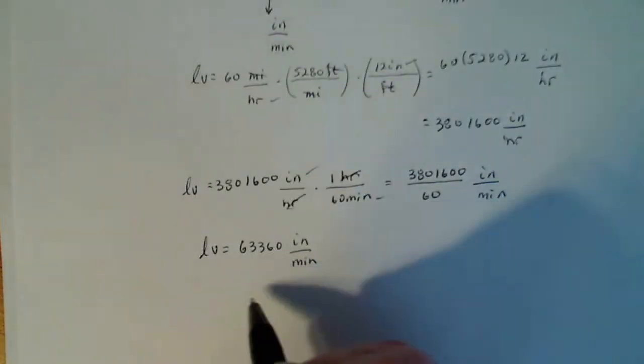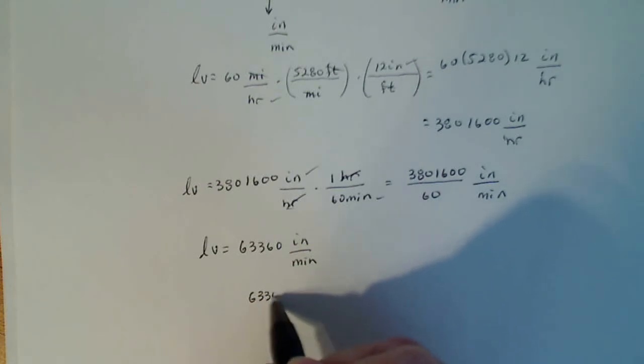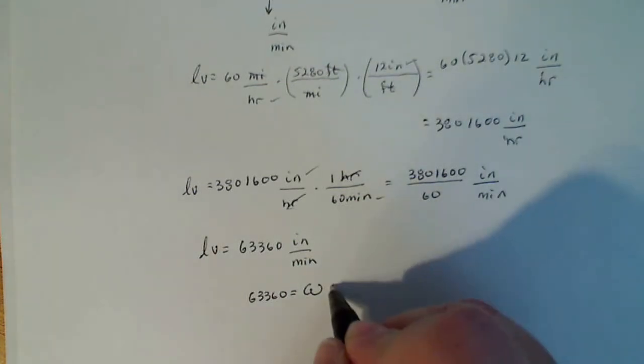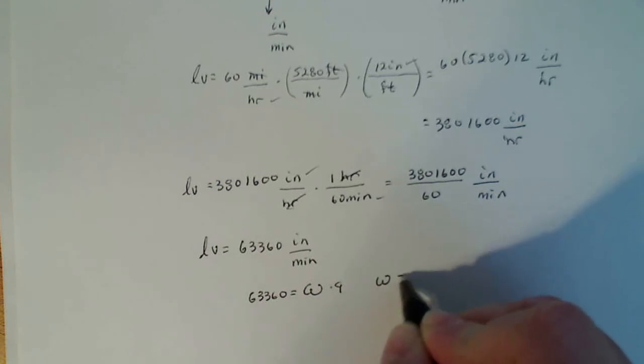So my current linear velocity is equal to my unknown, which is my angular velocity times my radius. So my angular velocity becomes 63,360 divided by 9.